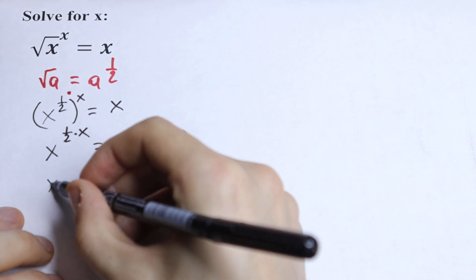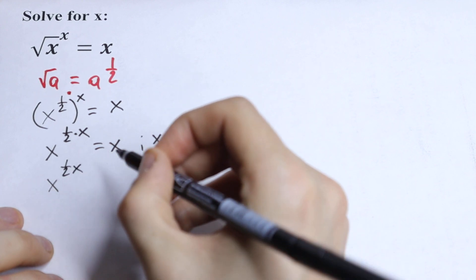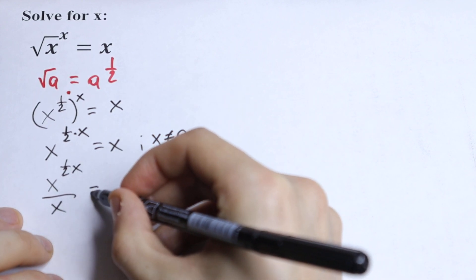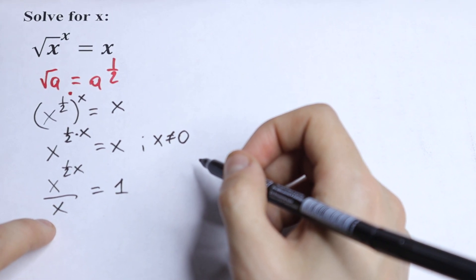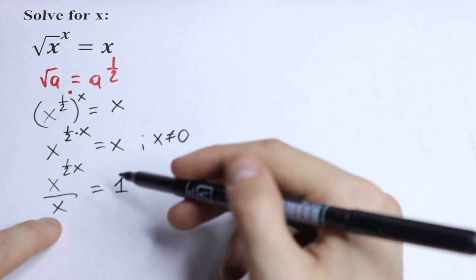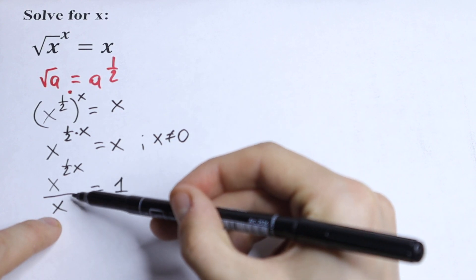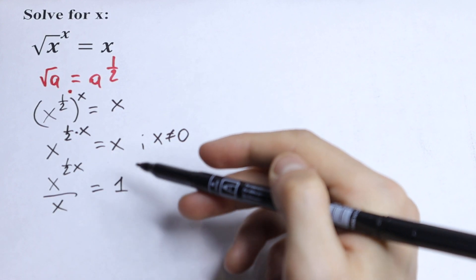We will have x to the power (1/2)x over x equal to 1. If we have a situation like that, if we have some x in our denominator, we can bring this to our numerator, but we need to put minus right here in our power.